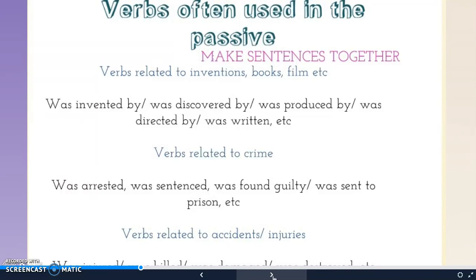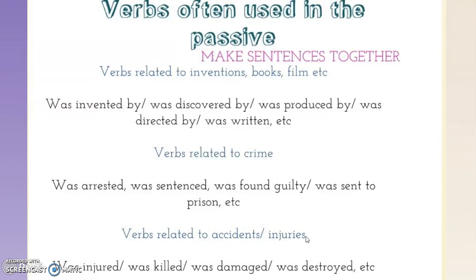writing, etc., rather than the person itself. So, we would say that something was invented by, it was discovered by, it was written by, etc. The passive is often used when we talk about crime, because the action, again, is more important. So, we will say: the burglar was arrested, he was sentenced, he was then found guilty, and finally he was sent to prison. When we talk about accidents, we also tend to use the passive. So, we would say someone was injured in the accident, or they were killed in the accident, the car was damaged in the accident, etc.